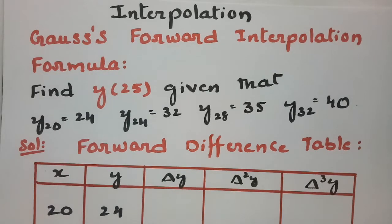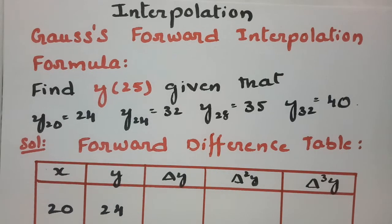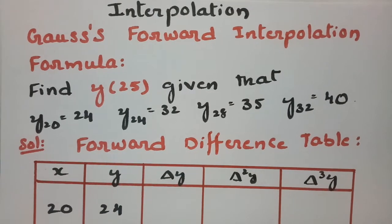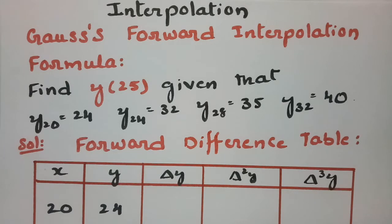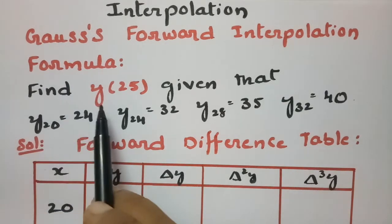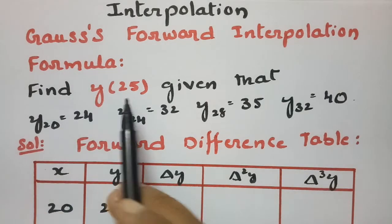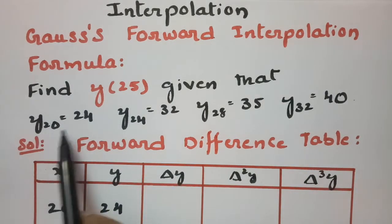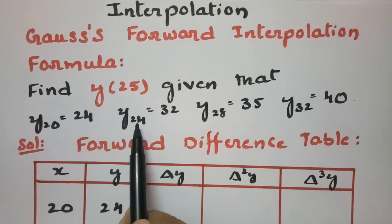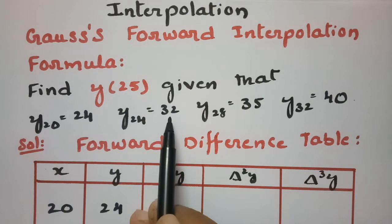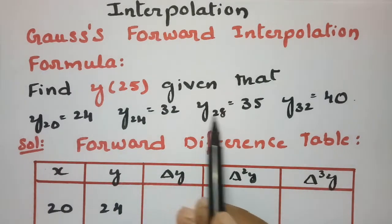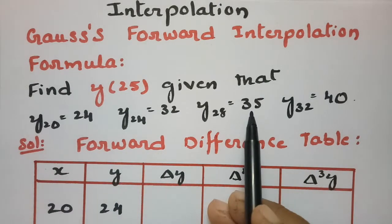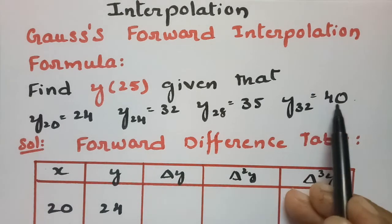In today's video, I am going to explain Gauss's forward interpolation formula. Using Gauss's forward interpolation formula, we have to find y at 25, given that y at 20 is equal to 24, y at 24 is equal to 32, y at 28 is equal to 35, and y at 32 is equal to 40.